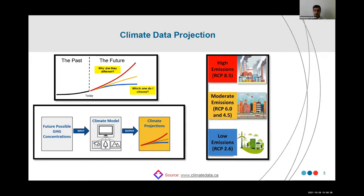Climate data projection is a science. It's not easy to obtain projected climate change data — you definitely need climatic models and supercomputers to convert future possible greenhouse gas emission concentrations into temperature, humidity, moisture, and other environmental factors. Depending on the assumptions for GHG emissions, for example, representative concentration pathway RCP 8.5 — the business as usual scenario — or more moderate scenarios like RCP 4.5 or 6, or low emission scenario RCP 2.6, they all define different futures. Based on how much GHG is emitted, we have to consider different scenarios to be prepared for different types of future climate.